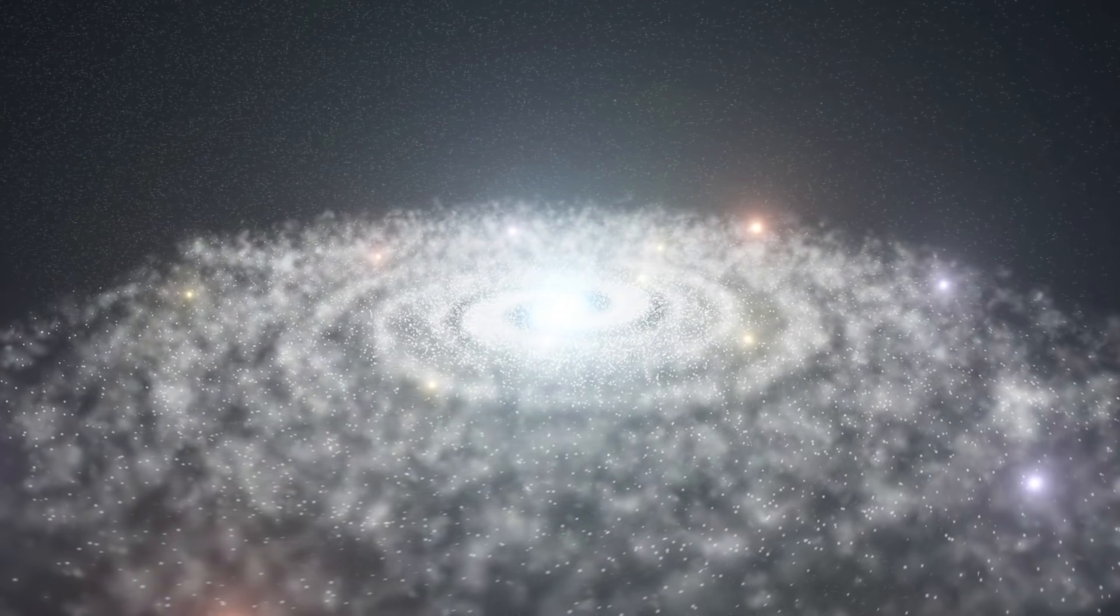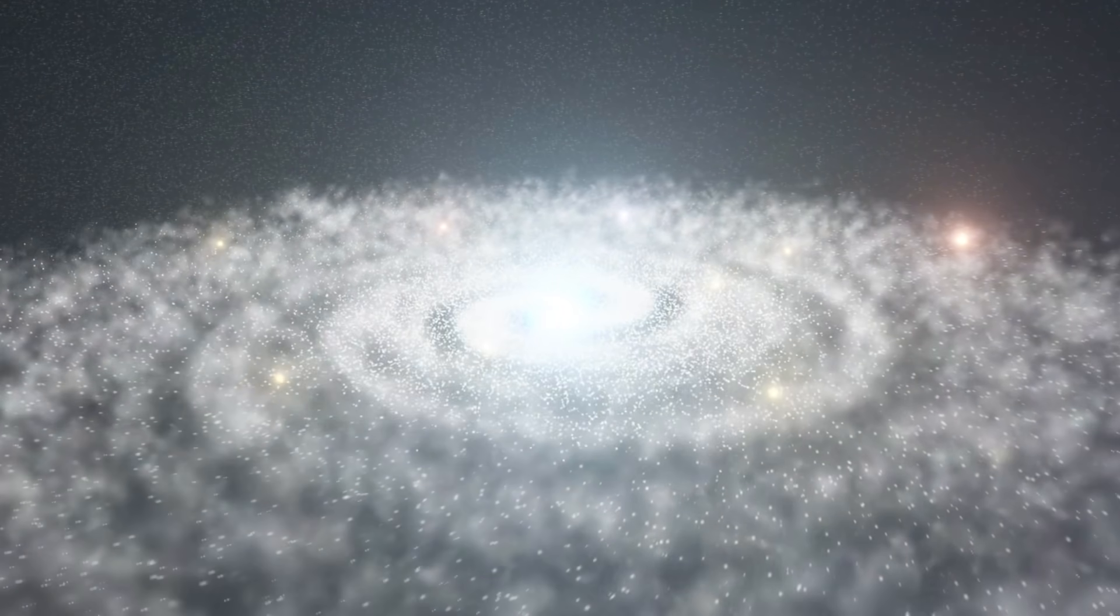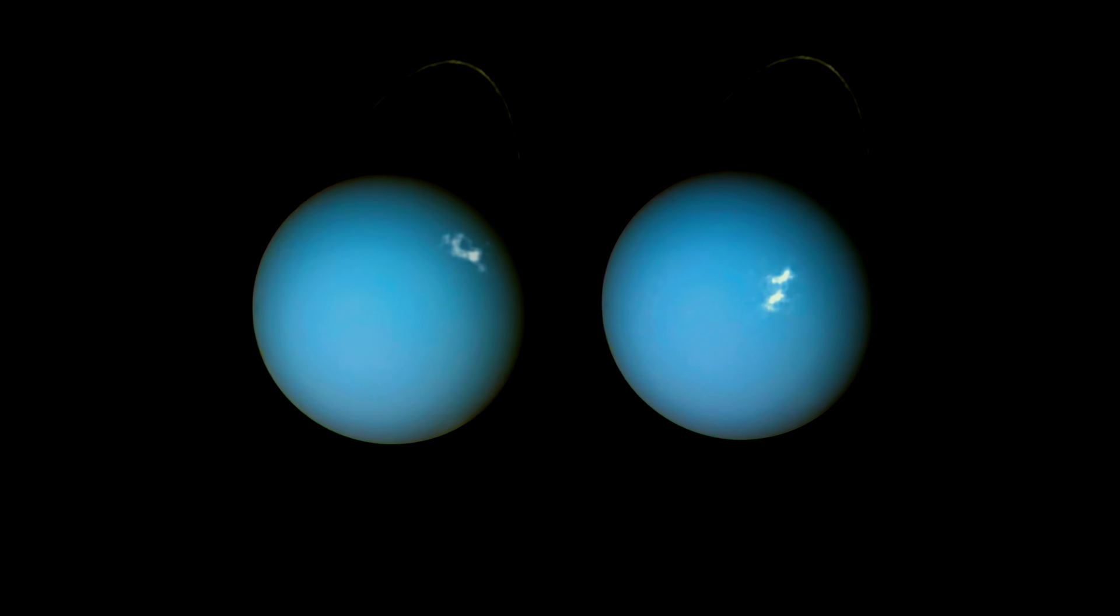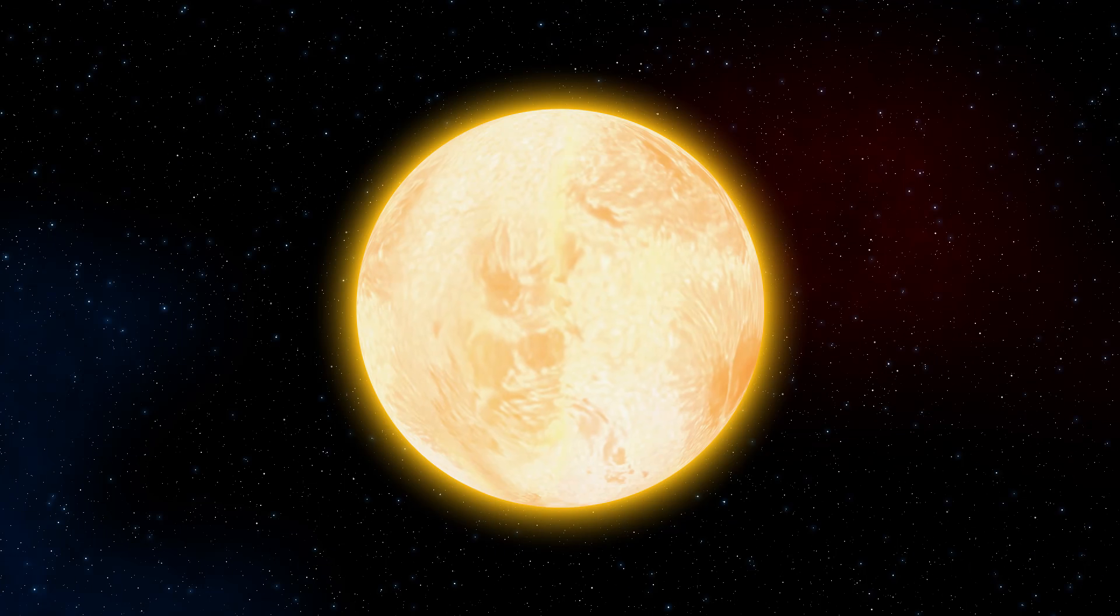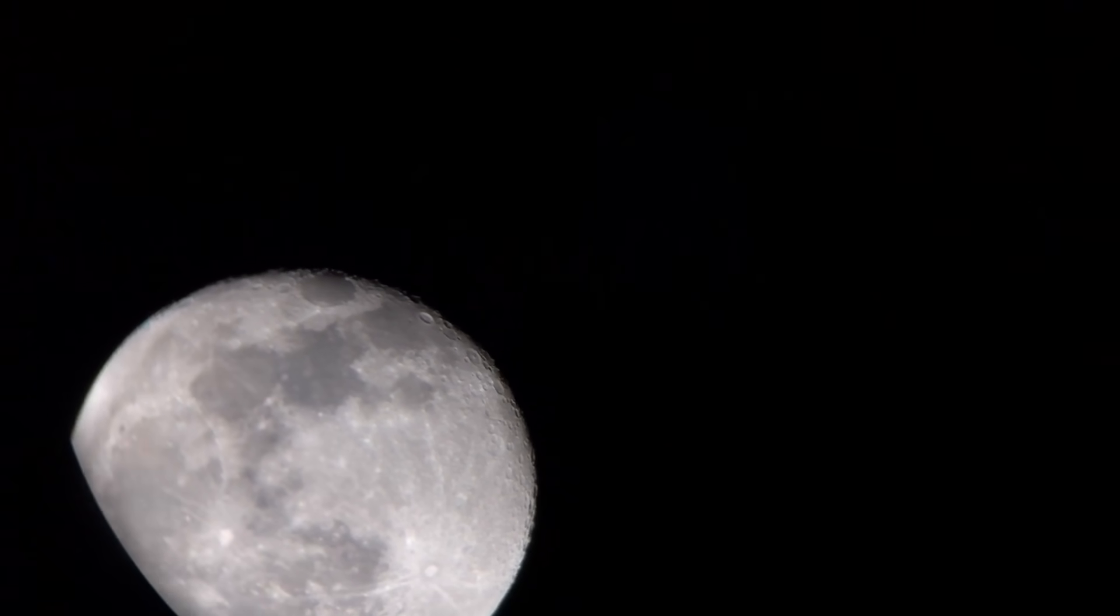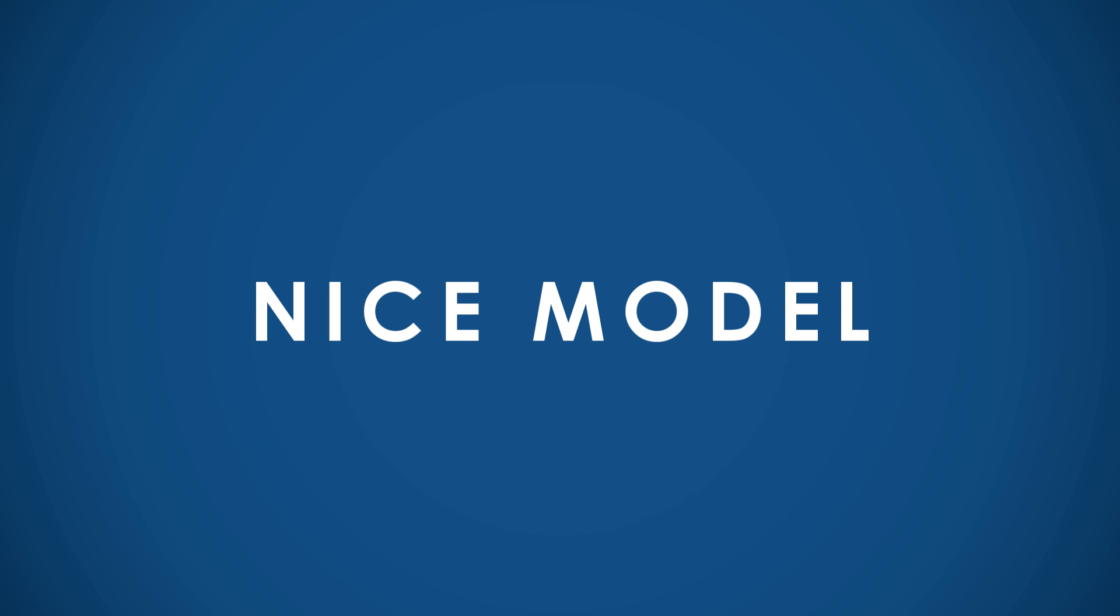The early solar system must have been a very different place from what we see today. Several features such as the tilt of Uranus, the high iron concentration of Mercury, the presence of lithium on the Sun and the Earth's Moon are best explained by introducing more planets into the early solar system. But before we get into any details, we first need to understand the Nice model.